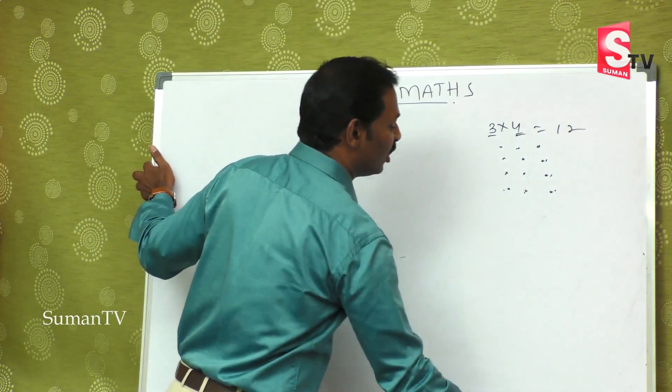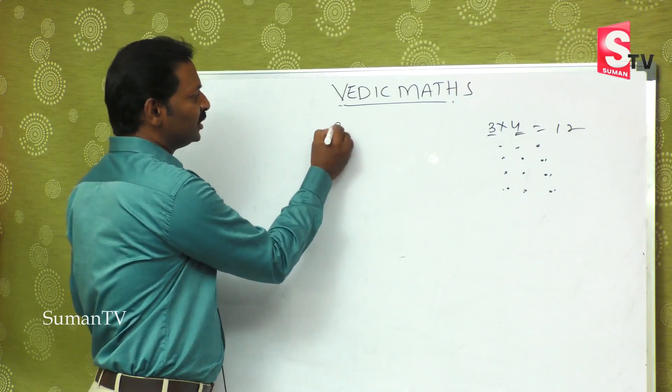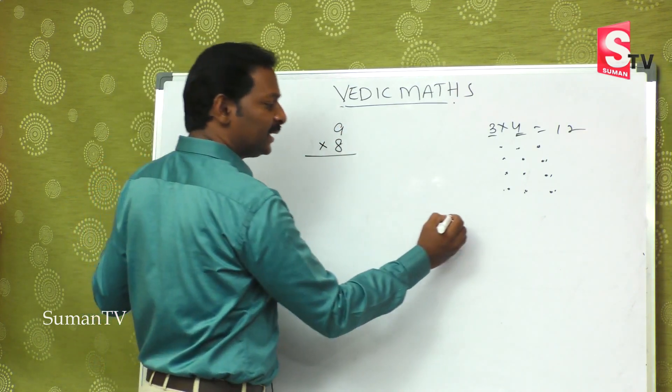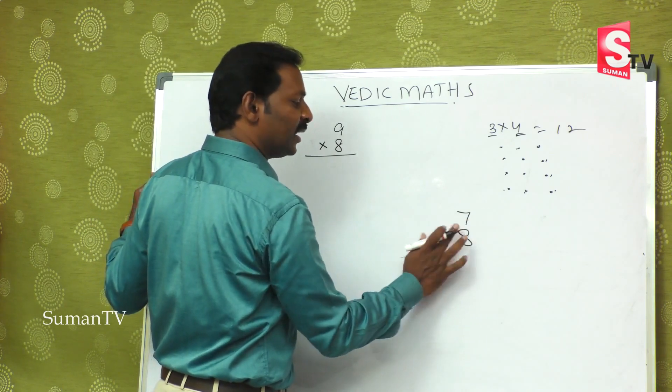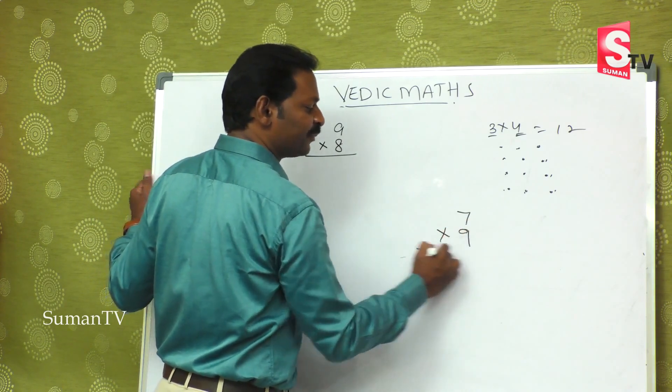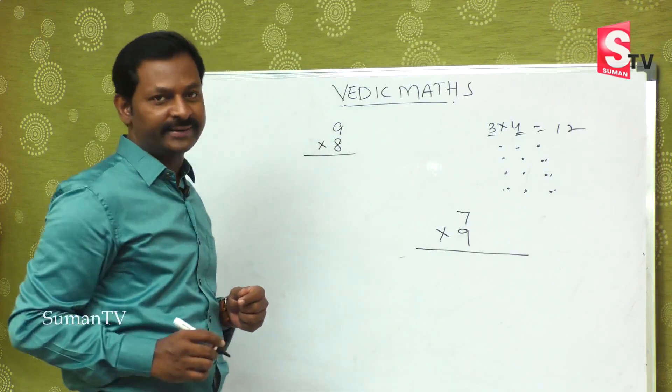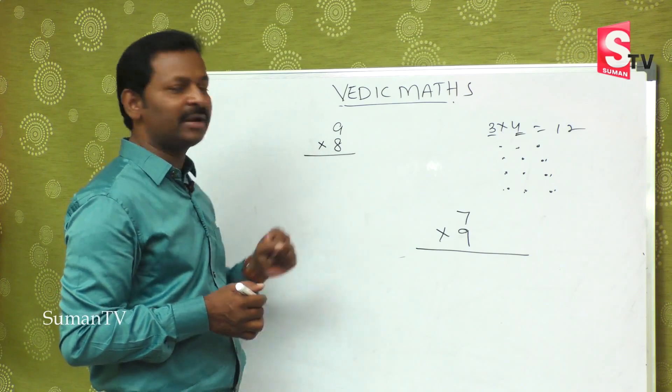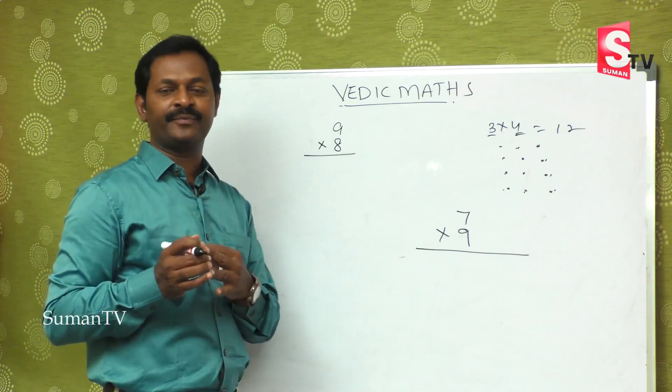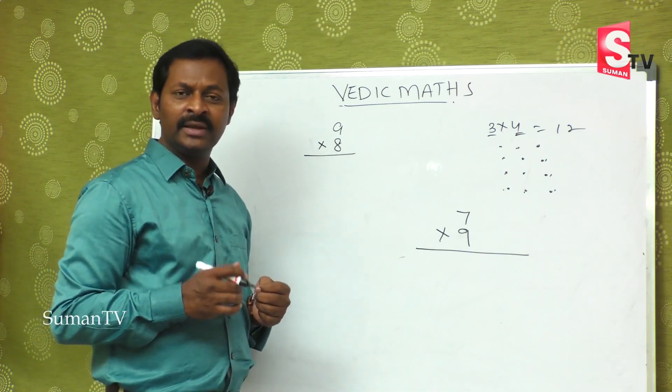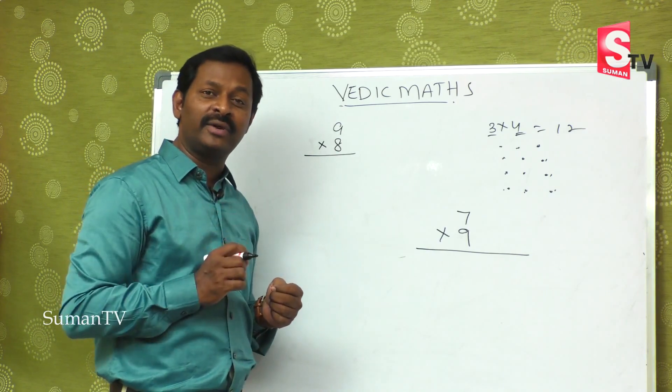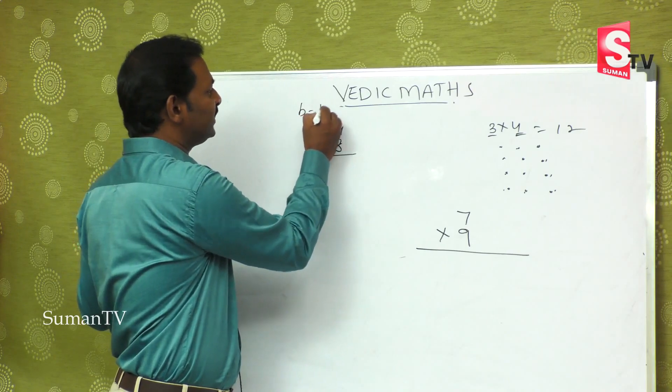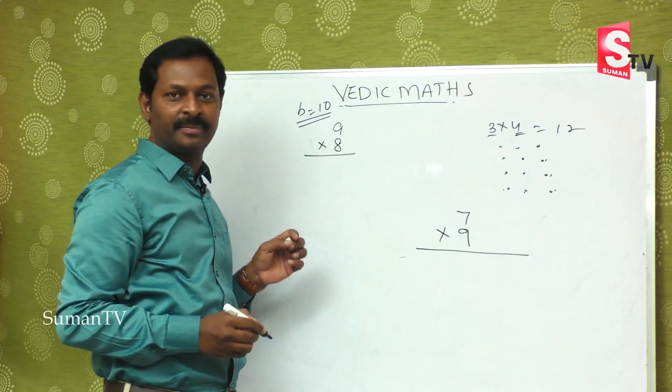First, I will start with the small number. Suppose 9 is multiplied by 8. How do we do this? One is 9 and one is 8. This is how we multiply. If you want to multiply these two numbers, the number is 10. We will start with base number 10. What is base number 10?